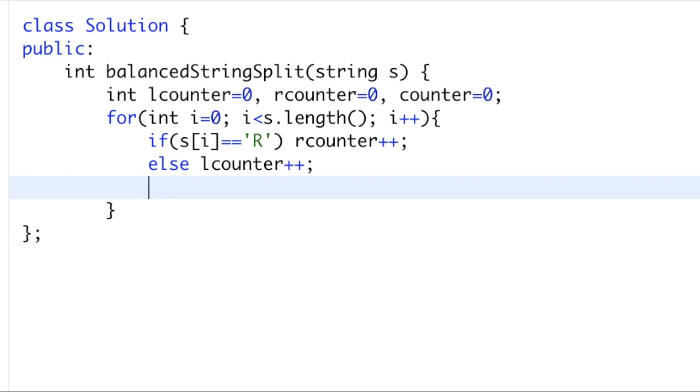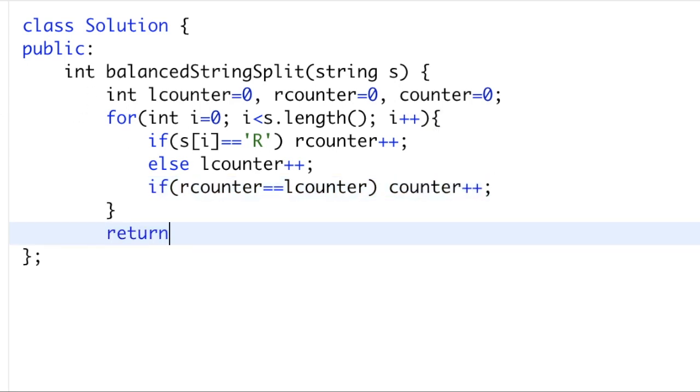After here, we want to check if it is a valid string where both sides are balanced. By doing this, we check if R counter is equal to L counter. And if so, then we write counter plus plus. And then at the end, we can just return counter.